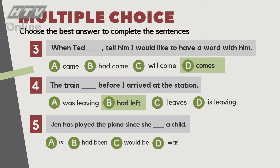Câu số 5: 'Jane has played the piano since she ___ a child.' Đáp án: A - Is, B - Had been, C - Would be, D - Was. Theo lý thuyết về present perfect mà các bạn đã học, Jane đã chơi piano từ hồi bé tới bây giờ. Do đó đáp án là D - 'Was': 'since she was a child.'